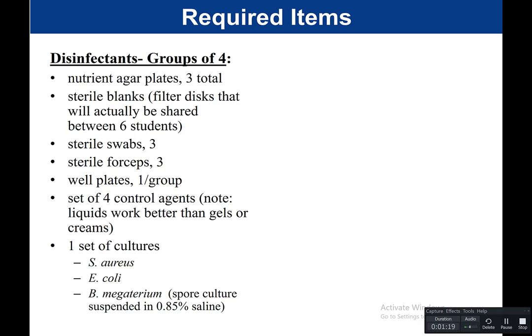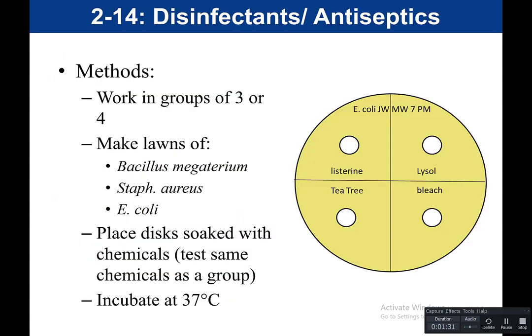For B. megaterium, it's actually a spore culture because Bacillus produces endospores. In a little bit, I'll talk more about why we chose these three organisms.